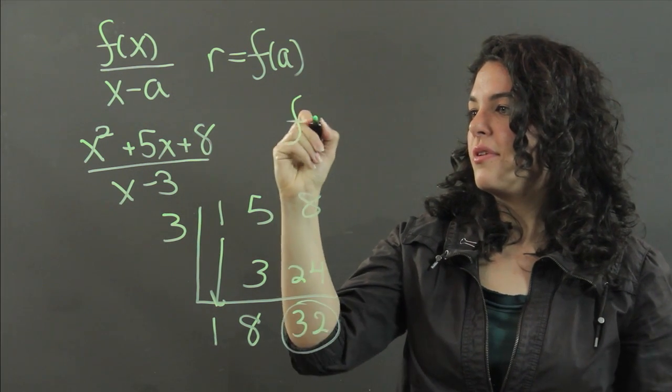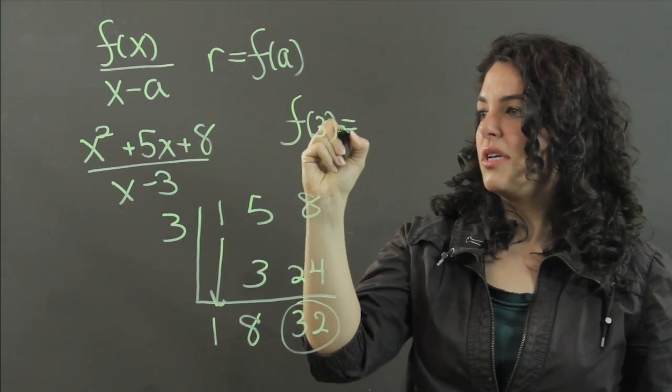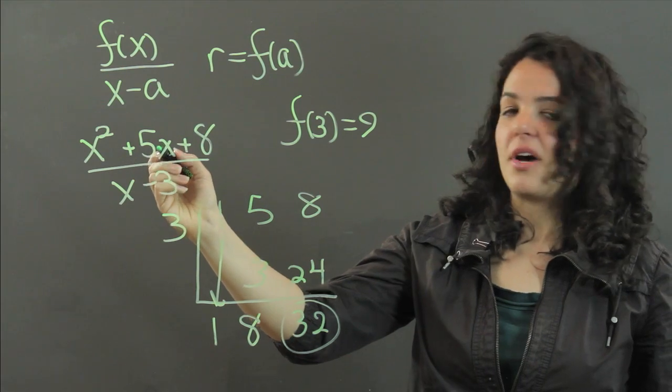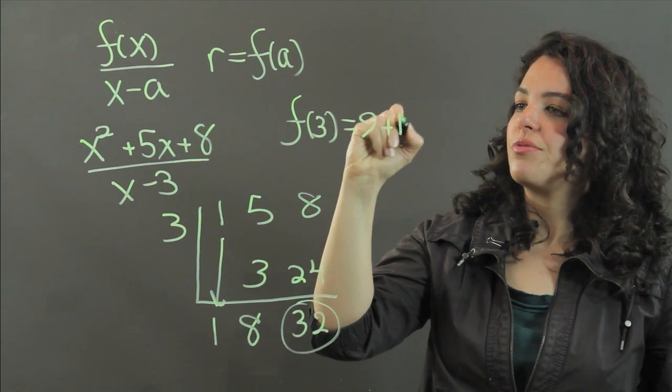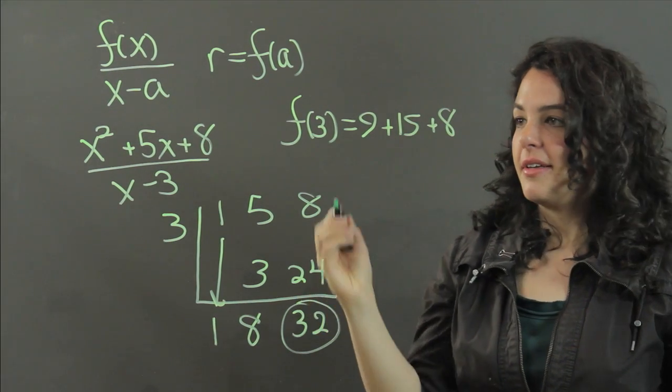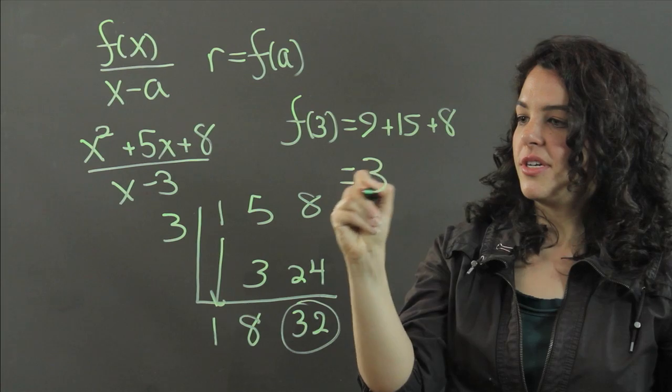F of 3 in this case would equal 3 squared, which is 9, plus 5 times 3, which is 15, plus 8. And that does indeed equal 32.